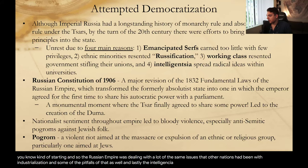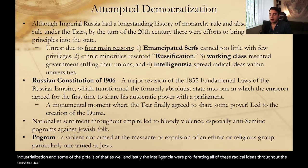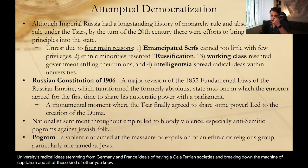And lastly, the intelligentsia were proliferating all of these radical ideas throughout the universities — radical ideas stemming from Germany and France, ideas of revolution, of Marxist ideals, of having egalitarian societies and breaking down the machine of capitalism. All of these ideas were seen as very dangerous to a monarchy.